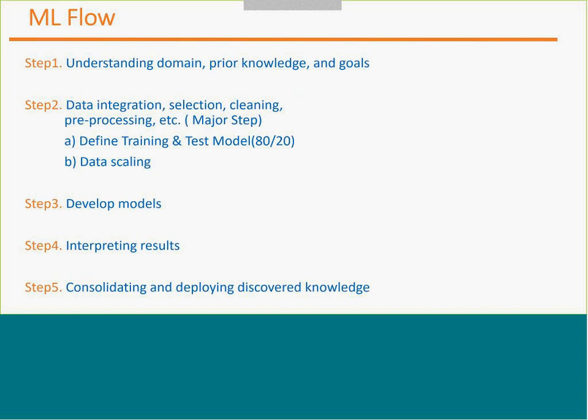There are five different steps for machine learning. Step one: you should understand the domain, have some prior knowledge about the data, and know what your goal is. Step two is data cleaning — the major step. As part of data cleaning, we determine what is our training set and test set, following the 80/20 principle where 80% of data goes into training and 20% becomes the test set. In R, we have a split method for that. We also do data scaling using the scale function in R. Today we are going to see what data scaling means and how to do it.